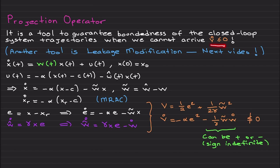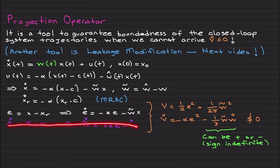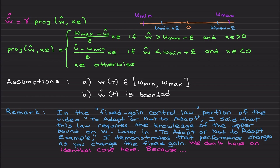This is exactly what I meant: the projection operator — along with leakage modification to be covered in the next video — is one of the tools to guarantee boundedness of the closed-loop system trajectories when we cannot arrive at v̇ ≤ 0, as in this case. So we are going to modify the parameter update law with a projection operator.